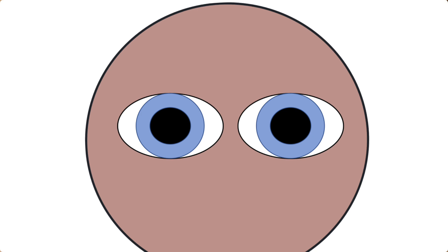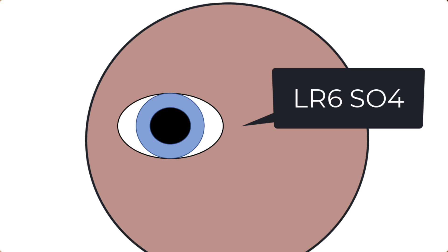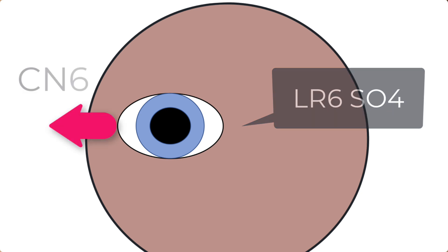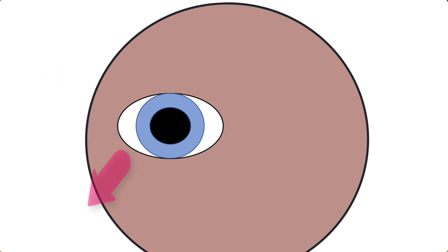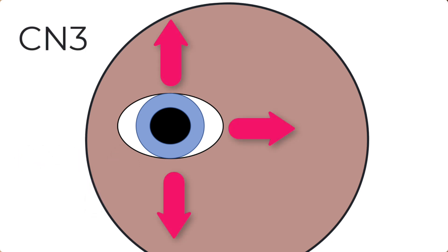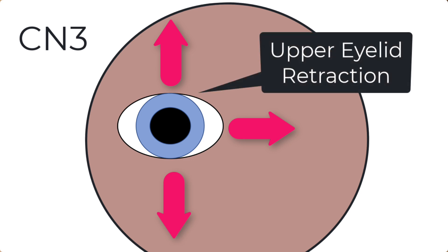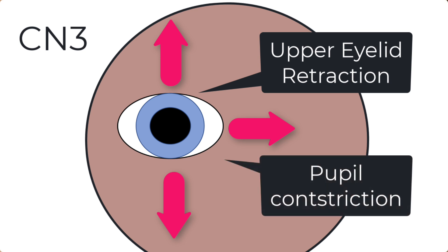A very quick revision of the cranial nerves that control eyeball movements. I like to use the LR6SO4 memory aid. Lateral rectus is innervated by cranial nerve 6 and it moves the eyeball outwards or laterally. Cranial nerve 4 innervates the superior oblique muscle which moves the eyeball down and out. And cranial nerve 3, also known as the oculomotor nerve, innervates all of the other eyeball muscles and is responsible for all other movements in all other directions. Cranial nerve 3 also opens the eyelid and carries parasympathetic fibers which promote pupil constriction.